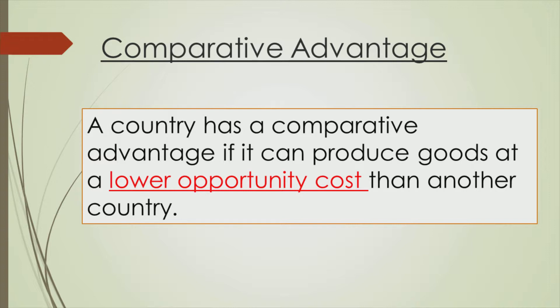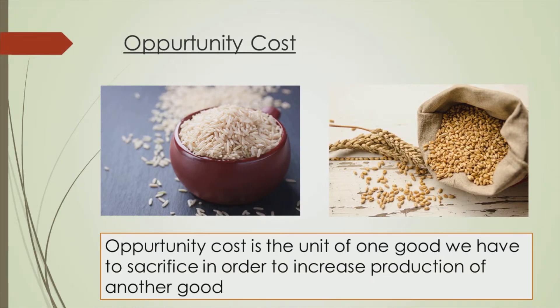Now what is an opportunity cost? Assume a country can make two goods: rice and wheat. If it chooses to increase the production of rice, it will have to decrease the quantity of wheat it can produce, and vice versa. So the opportunity cost of rice in this example is the unit of wheat we have to sacrifice in order to produce rice. In other words, opportunity cost is the unit of one good we have to sacrifice in order to produce another good.